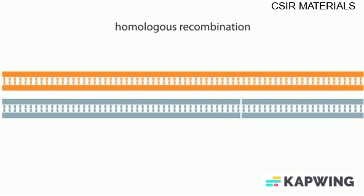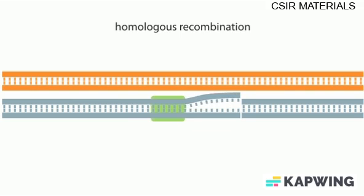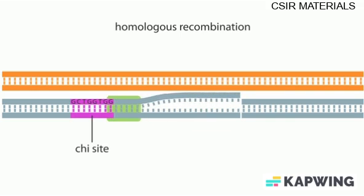The best studied E. coli recombination system is called the REC-BCD pathway. REC-BCD is a multi-protein enzyme that binds to the free ends of a double-strand break. REC-BCD progresses along the DNA using its helicase activity to break the base pairs until it reaches the first copy of a consensus sequence called a chi-site.